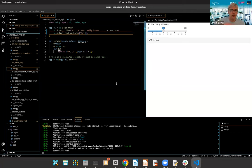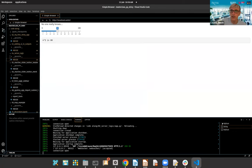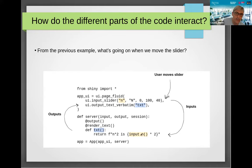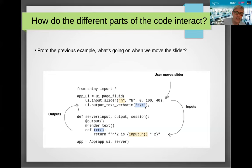Hopefully this is making sense as we gradually step up the complexity of these apps. Just to pause and make sure everyone understands how the different parts of the code interact: we've got our UI at the top and our server function below — they're married together. When the user moves the slider, the input value stored as n is modified, and that input value is then used in the output string through a function called txt. At first I found it counterintuitive to have a function name within double quote marks, but it's something you'll get used to. When that value changes, it re-executes the txt function, changes the value, and renders it on screen.